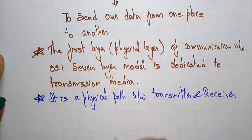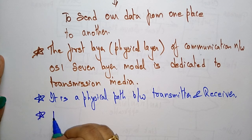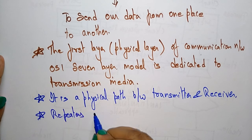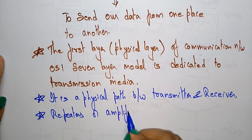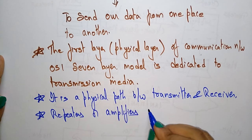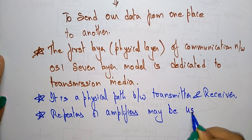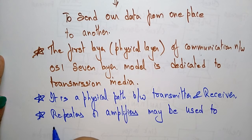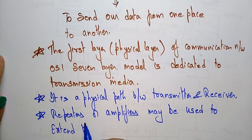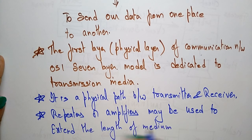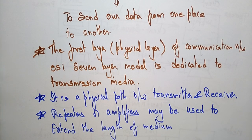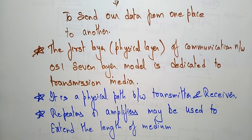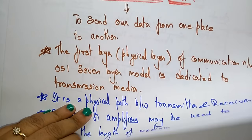To transmit data from sender to receiver, we use repeaters or amplifiers. Repeaters or amplifiers may be used to extend the length of the medium. So to extend the length of the medium, you can add more repeaters or amplifiers to send data across longer distances from sender to receiver.